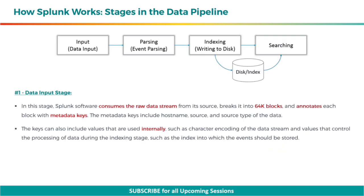In the data input stage, Splunk software consumes the raw data stream from its source, breaks it into 64K blocks, and annotates each block with metadata keys. The metadata keys include host name, source, and source type of the data. The keys can also include values used internally, such as character encoding of the data stream, and values that control processing during the indexing stage, such as the index into which the events should be stored.